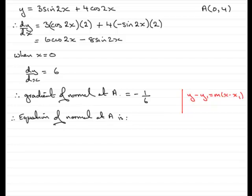So we therefore have Y minus Y1, Y1 being 4, equals the gradient minus 1 sixth, multiplied by X minus X1. X1 is 0.